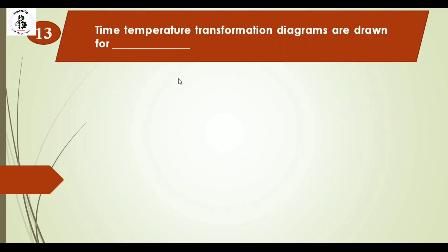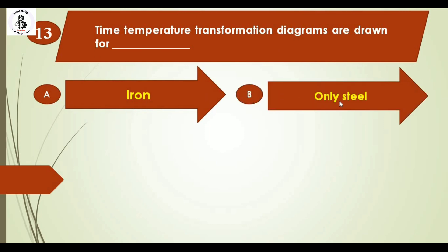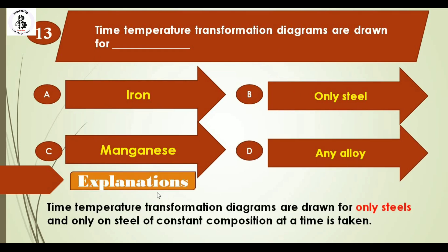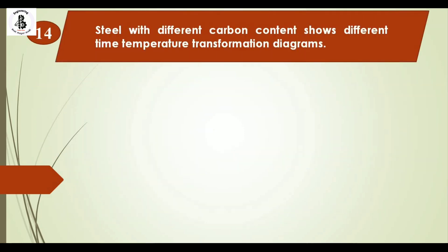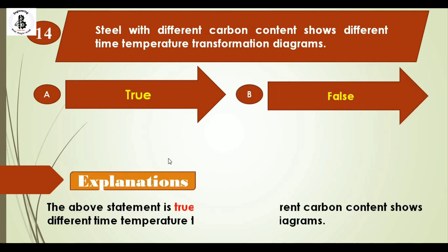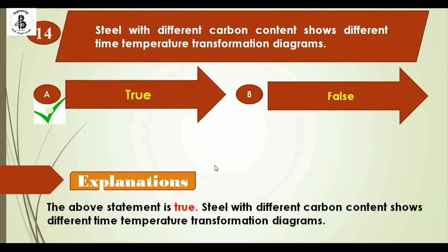Question 13: Time-temperature transformation (TTT) diagrams are drawn for — Option A: iron, Option B: only steels, Option C: manganese, Option D: any alloy. TTT diagrams are drawn only for steels of constant compositions. The right answer is option B: only steels. Question 14: Steels with different carbon contents show different TTT diagrams — True or False? This statement is absolutely correct. The right answer is option A: true.